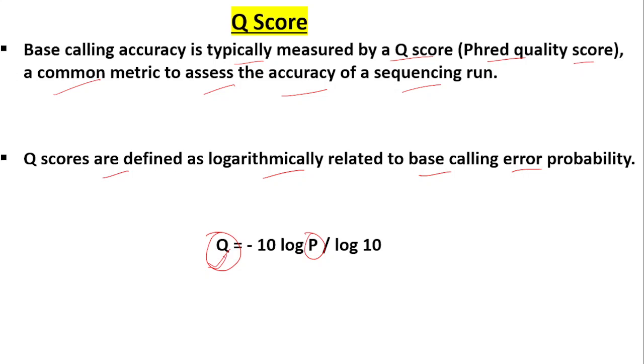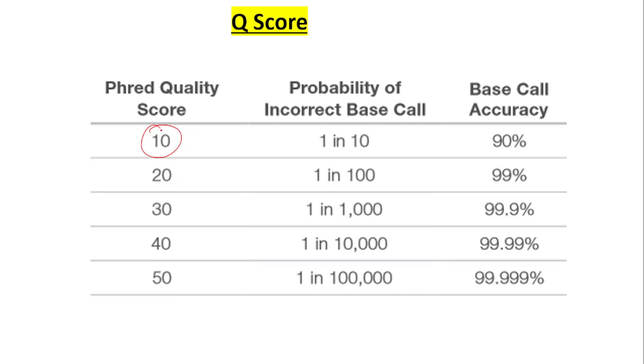You can see that this Q is the quality score, and P here is the probability of an incorrect base. The formula is Q = -10 log P / log 10 to calculate the Q score.